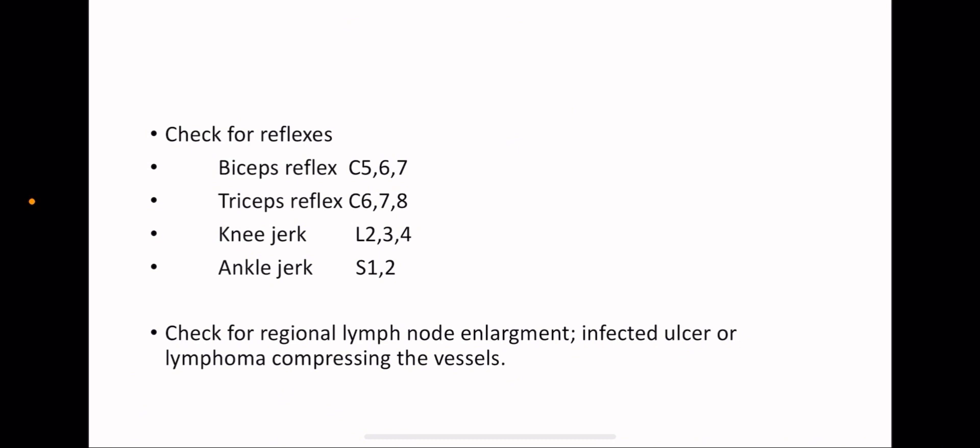Check for reflexes. Usually you will check the knee jerk which is L2, 3 and 4, and ankle jerk which is S1 and S2. I included biceps and triceps reflexes if you are examining the upper limbs. For completion, biceps reflex C5, C6, C7; triceps reflex C6, C7, C8. Then check for regional lymph node enlargement.